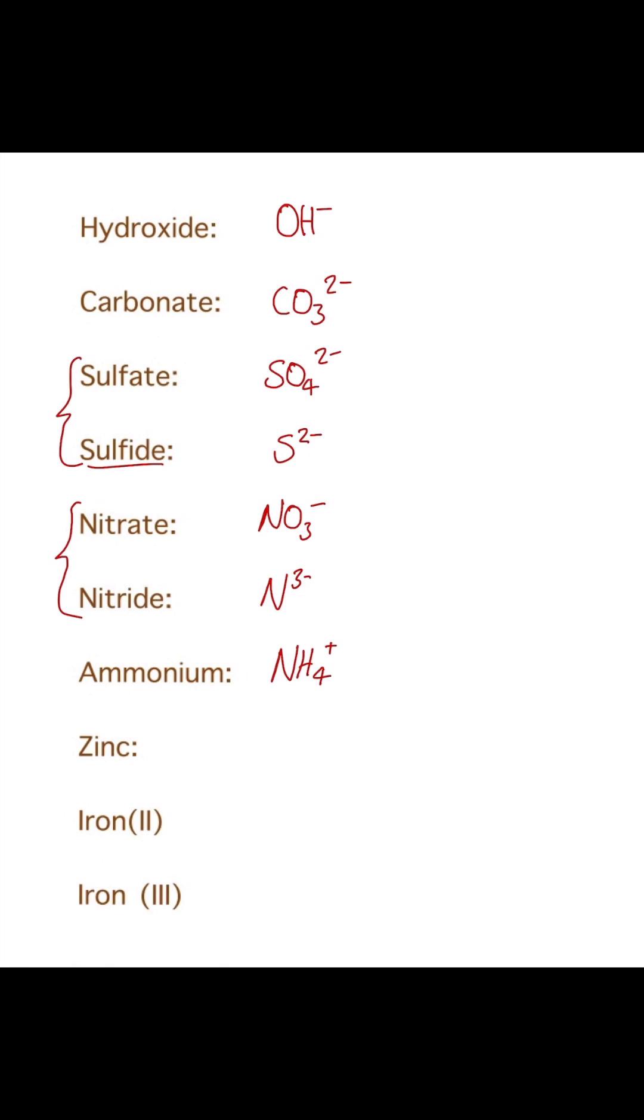Zinc is under the transition metal section, so it doesn't come under any of the groups. This is one you probably need to memorize as Zn2 plus. For transition metals, the thing is they can form more than one type of charge. You can look at the Roman numerals in the brackets and from that figure out what charge you'll have. So iron(II) would be Fe2 plus, and iron(III) would be Fe3 plus.